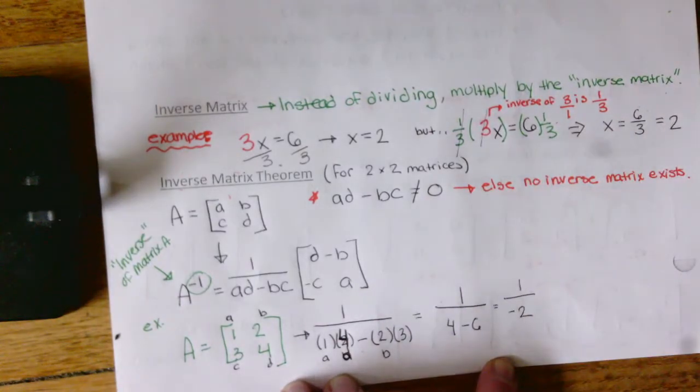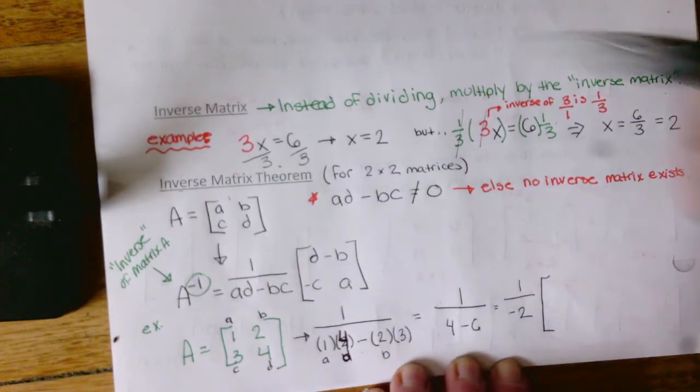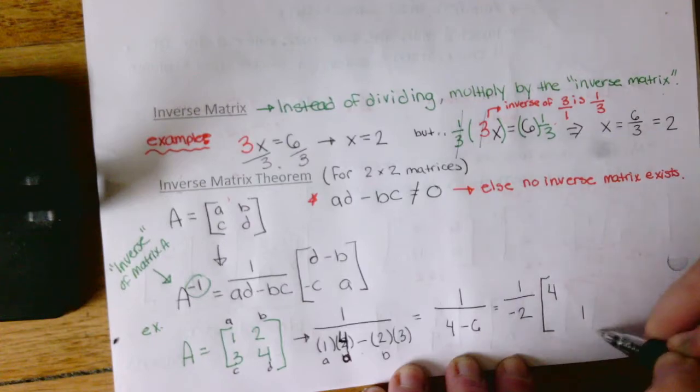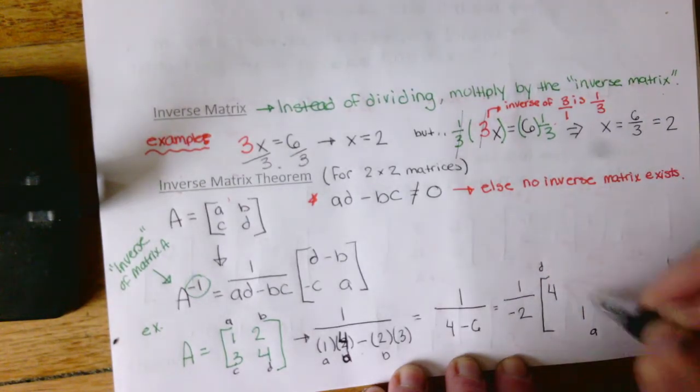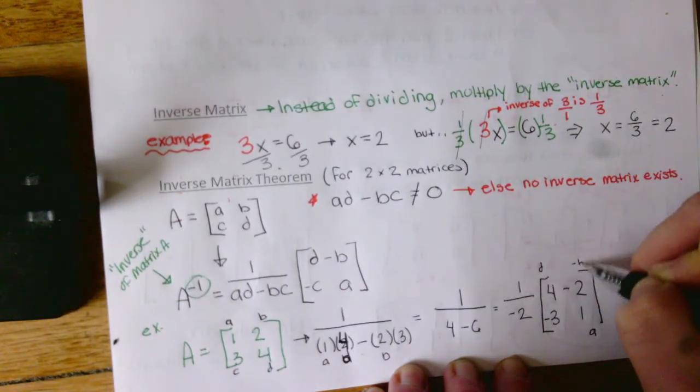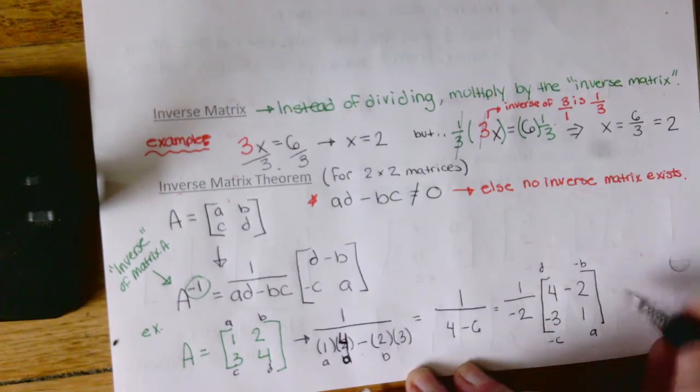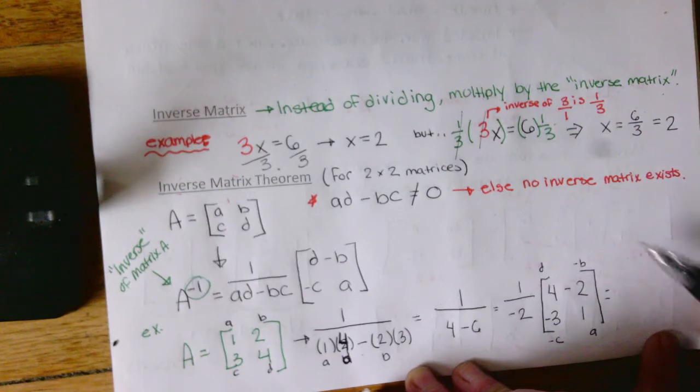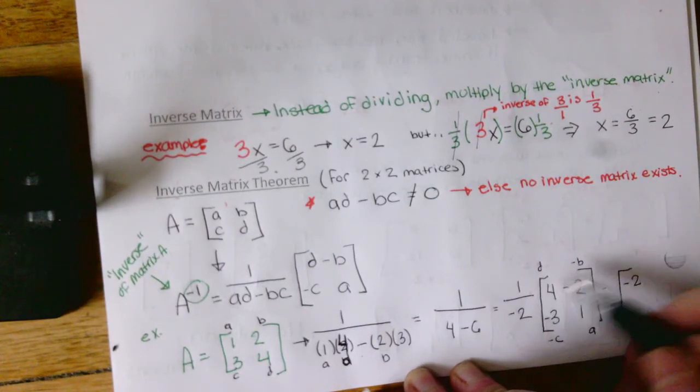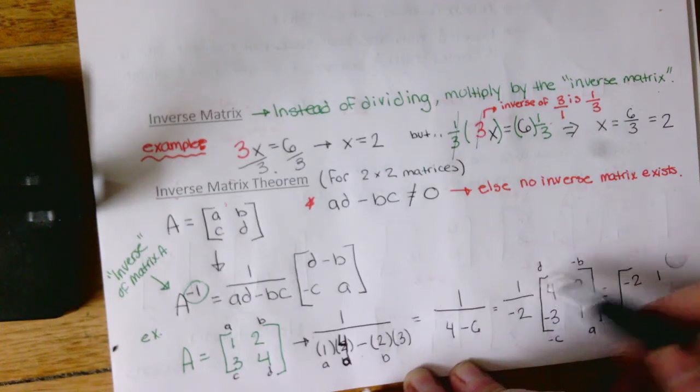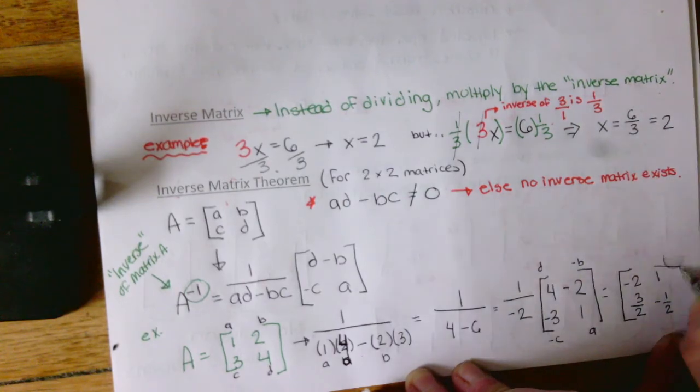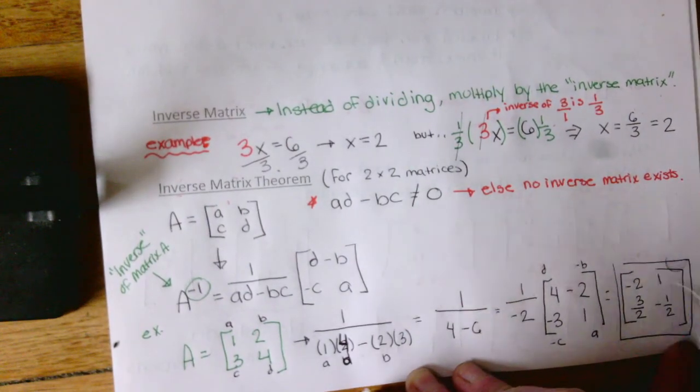Okay, so I'm gonna multiply this fraction by this matrix. So I'm gonna flip these two numbers, the 4 and the 1. So now my A is over here, my D is over here. And my B and my C will stay the same, but now they are just negative. So now I just have a scalar multiplication. So I'm gonna multiply negative 1 half by 4, negative 1 half by negative 2, negative 1 half by negative 3, negative 1 half by 1. And here is the inverse matrix.